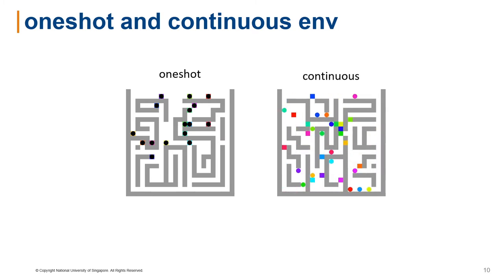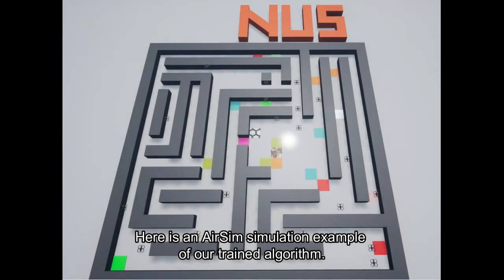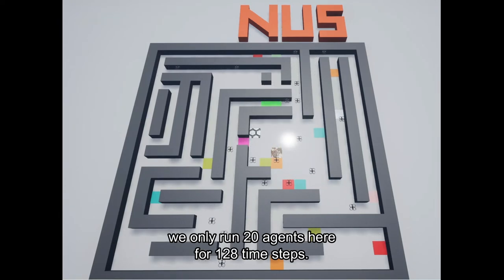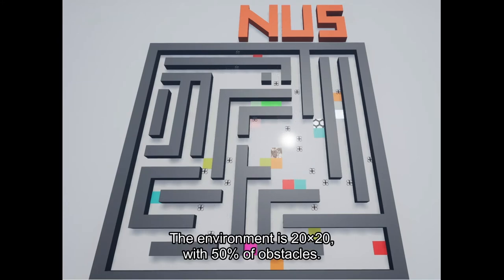Lifelong MAPF environment effectively mimics real-world robot deployments in distribution centers where agents are dynamically assigned new tasks and are constantly in motion in an attempt to complete them. Here is a simulation example of our trained algorithm. Primal 2 is designed to run without stopping, but for visualization, we only run 20 agents here for 128 time steps. The environment is 20 by 20, with 50% of obstacles.